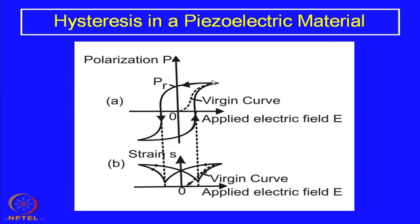You have a virgin curve — once you start from zero field, it follows a curve and goes to the saturation point when all the domains are aligned parallel to the electric field. If the electric field is then reversed, it does not come back to zero polarization at zero field; there is a remanent polarization. Then you need a coercive field in the negative direction to neutralize it, and it follows through to saturation in the negative direction — that is the hysteresis curve.